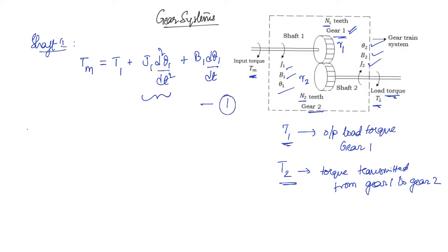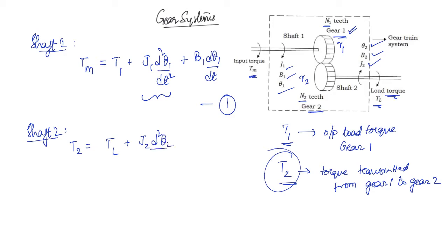The second equation is written for shaft 2. The input for shaft 2 is T2. So T2, the input torque to the second gear, equals the output load torque Tl plus the inertia element J2 times d²θ2/dt², plus the friction element B2 times dθ2/dt. This is equation 2.